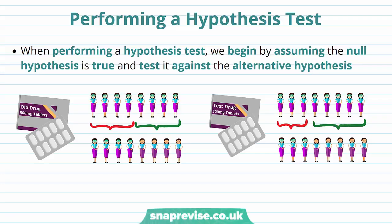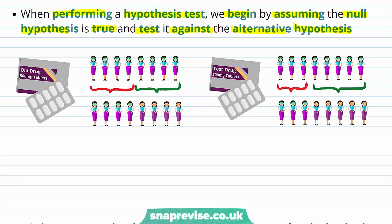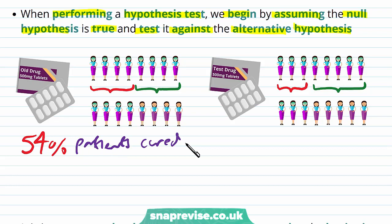So how do we perform a hypothesis test? When performing a hypothesis test we begin by assuming the null hypothesis is true and test it against the alternative hypothesis. Consider a situation where we have an old drug where in general 54% of patients are cured on this drug. We assume this to be true and then we have a trial in which 63 out of 100 patients get cured on a test drug.